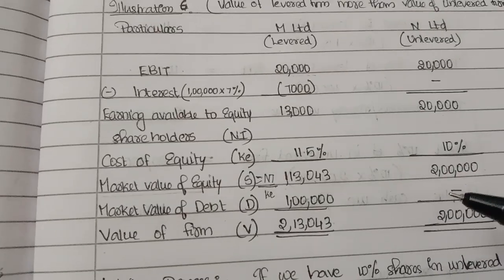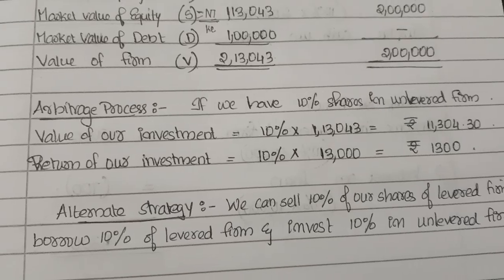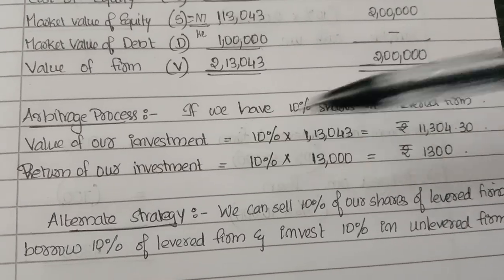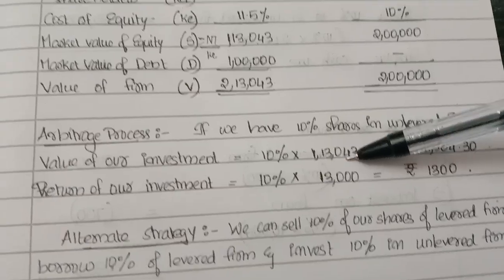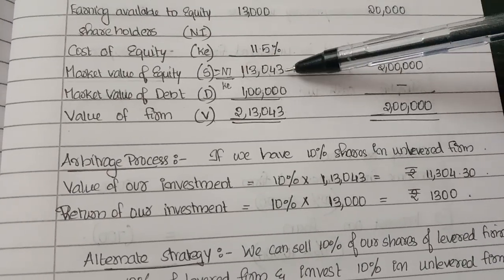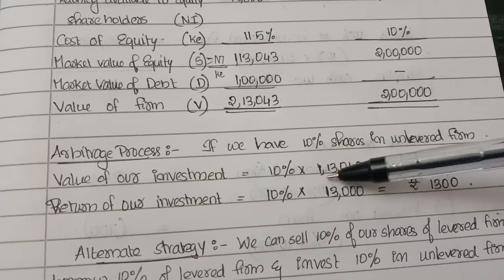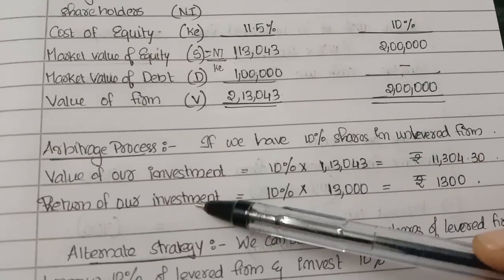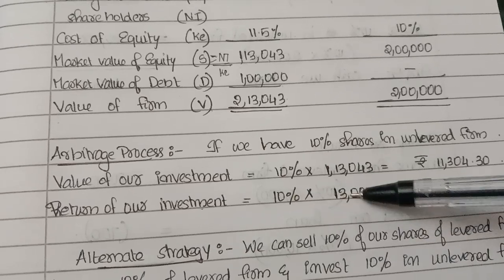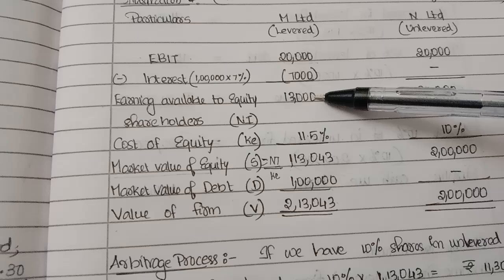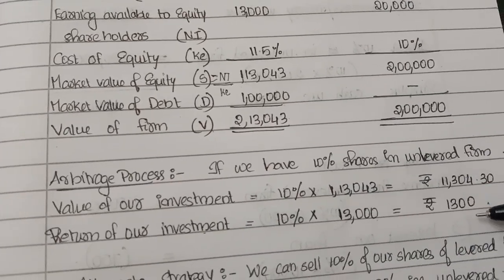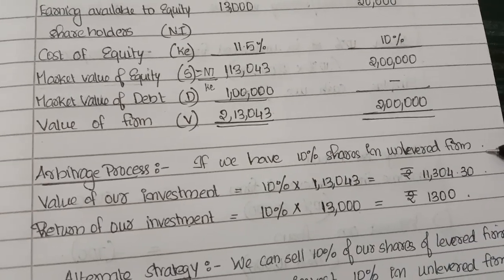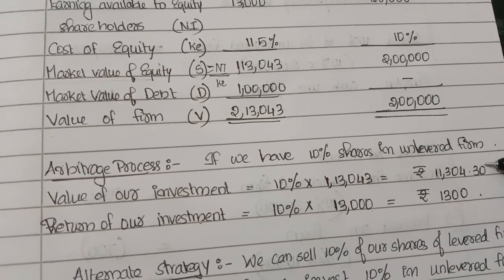Now let's see how the arbitrage process will be carried out. Suppose we have 10% shares in the levered firm (M Limited). The value of our investment is 10% of the market value of equity, which is 10% of 1,13,043 = 11,304 rupees. The return on our investment is 10% of earnings available to equity shareholders, which is 10% of 13,000 = 1,300 rupees.